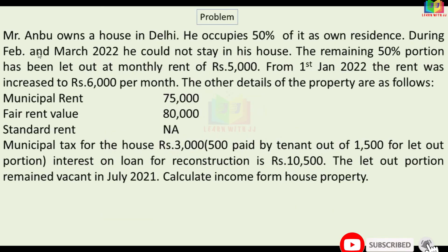Mr. Anbu owns a house in Delhi. He occupies 50% of it as own residence. During February and March 2022, he could not stay in his house. The remaining 50% portion has been let out at a monthly rent of Rs. 5,000. From 1st January 2022, the rent was increased to Rs. 6,000 per month.